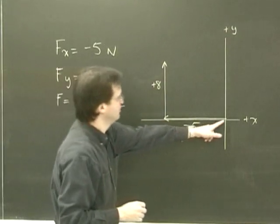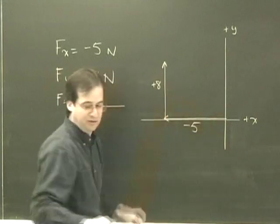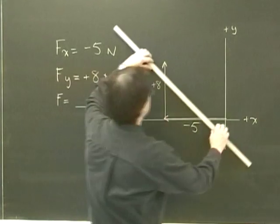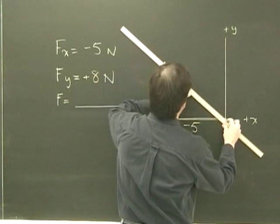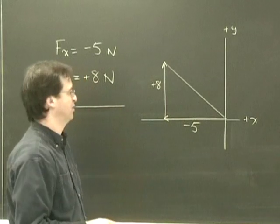So these are the two components. They go this way, start to finish, so my actual vector must go start to finish. So I join them up like this. There's the original vector that those two components come from.